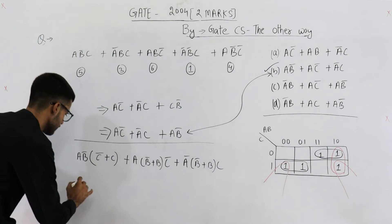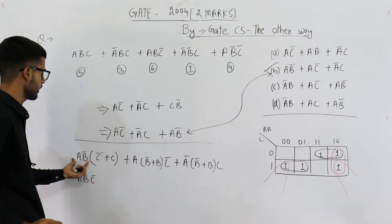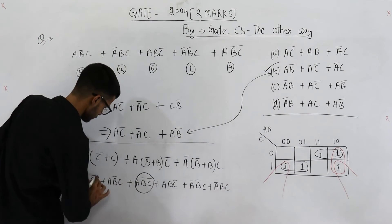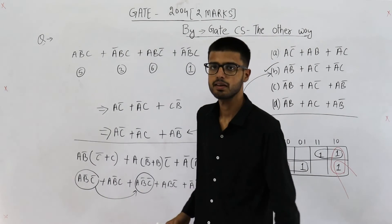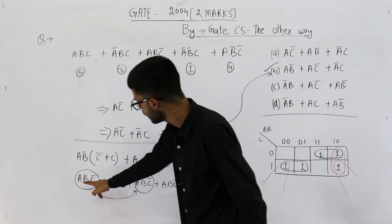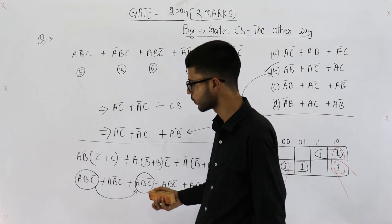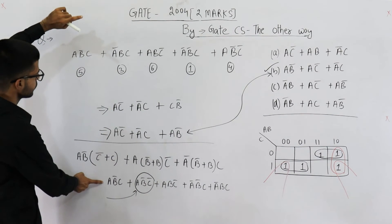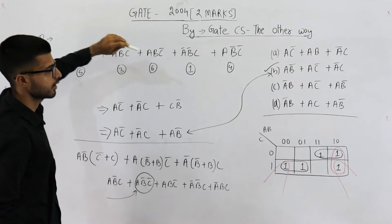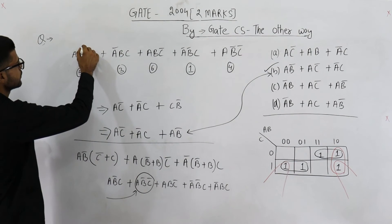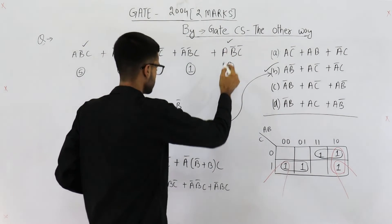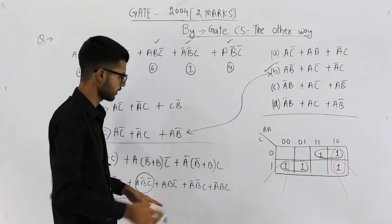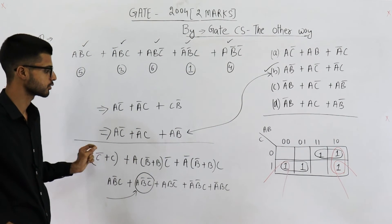Opening the brackets gives us: A B-bar C-bar, then A B-bar C. This is the canonical SOP form for option B. You can see A B-bar C-bar appears twice, so we can ignore the duplicate. Now compare both functions — the one given in the question and the one obtained by expanding option B. They are the same: A B-bar C is present, A B-bar C-bar is present, A B C-bar is present, A-bar B-bar C is present, and A-bar B C is present.